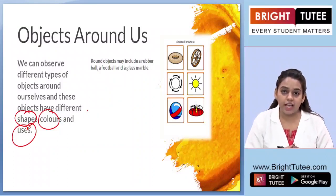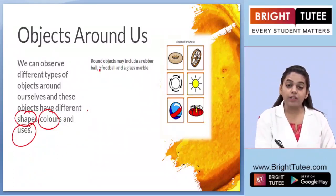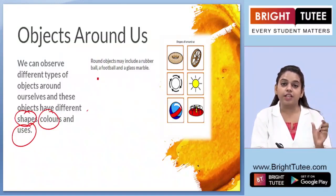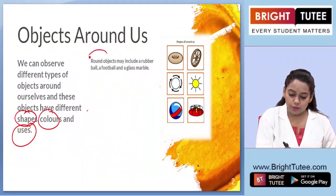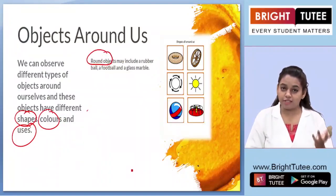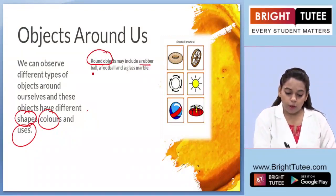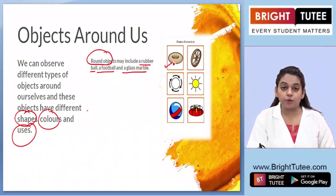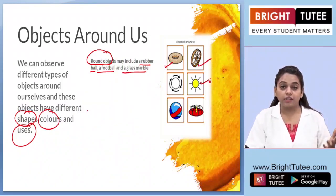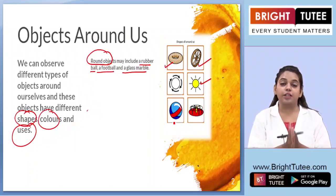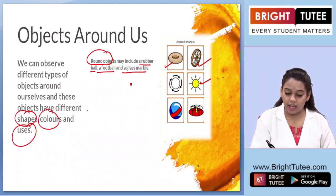We will first discuss how you can sort the objects as per their shapes. You will have to observe the objects around you and figure out the round objects. Make a table and list all the round objects — this may include a rubber ball, a football, a glass marble, a donut, a wheel, and even the sun and moon on a full moon day.